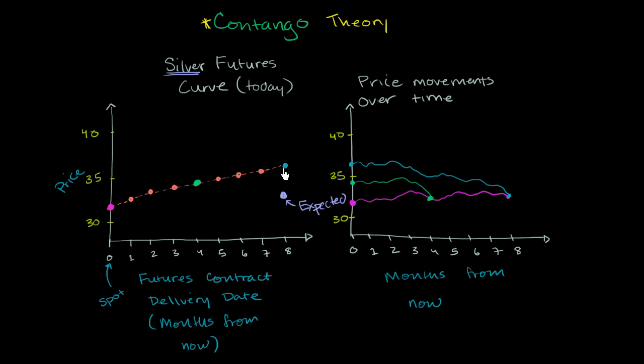And it's probably trading above the expected price because people who want to have silver in eight months don't want to buy it today and have to rent some space and store the silver and insure the silver and worry about someone stealing the silver. They'd rather just pay a premium to have it delivered in the future.